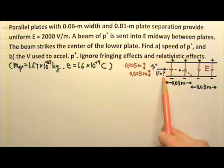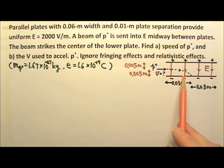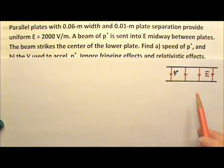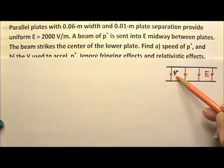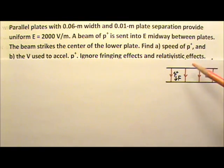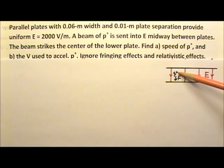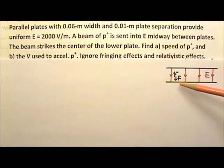To find the speed of a proton just before it enters this region, we need to know what kind of motion the proton goes through. Inside this region, a proton would experience a downward electric force because a proton is positively charged, and a positive charge would experience a force that is in the same direction as the electric field.